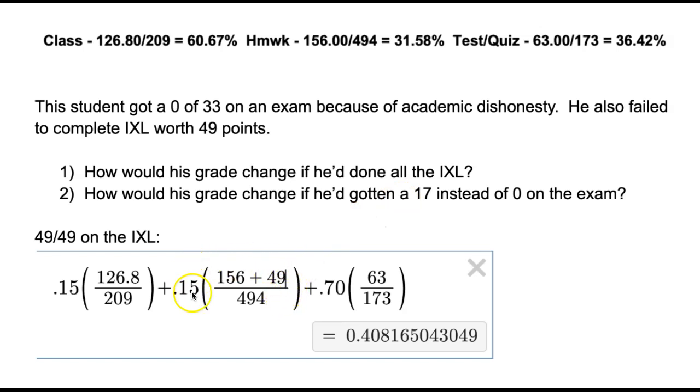So if they'd done the IXL, you'd just add another 49 points to the homework section. That would raise the grade to this.